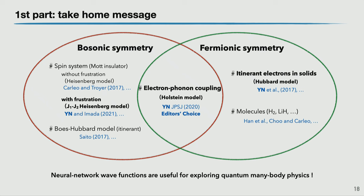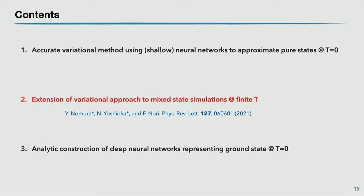To summarize the first part: the neural network quantum state, if properly constructed, can give state-of-the-art accuracy. We can then study interesting physics using the neural network quantum state. We now move on to the second topic: the extension to finite-temperature simulations.